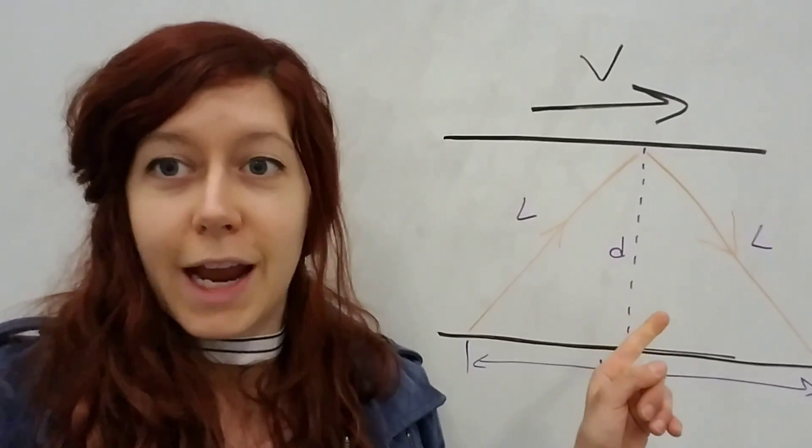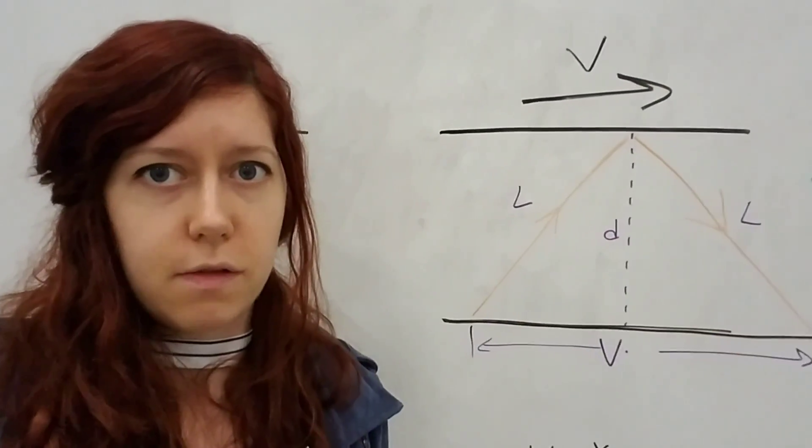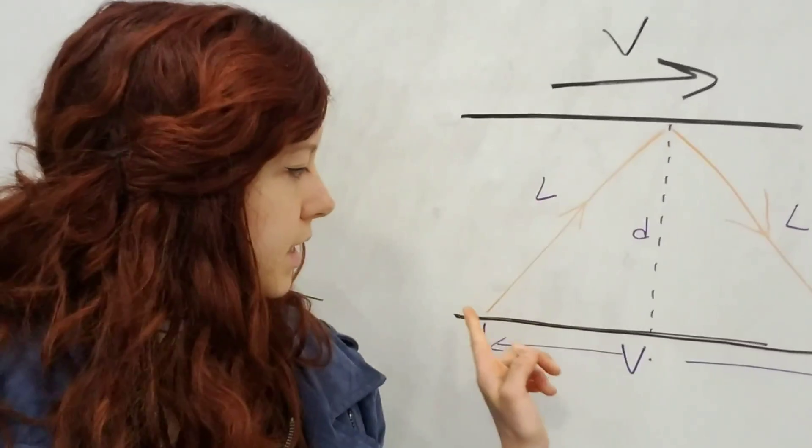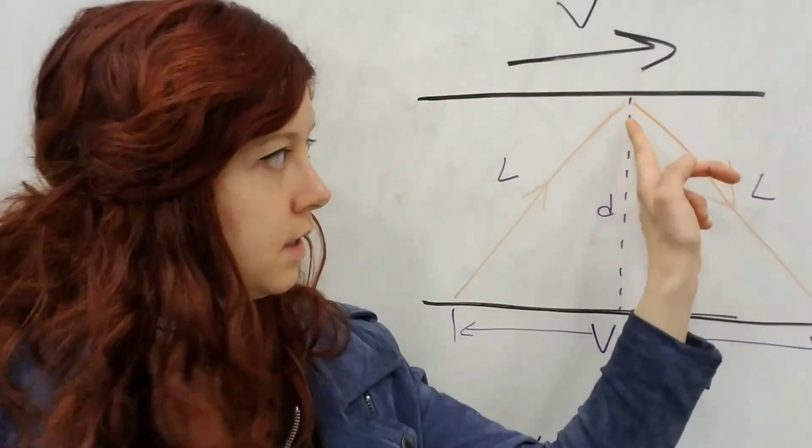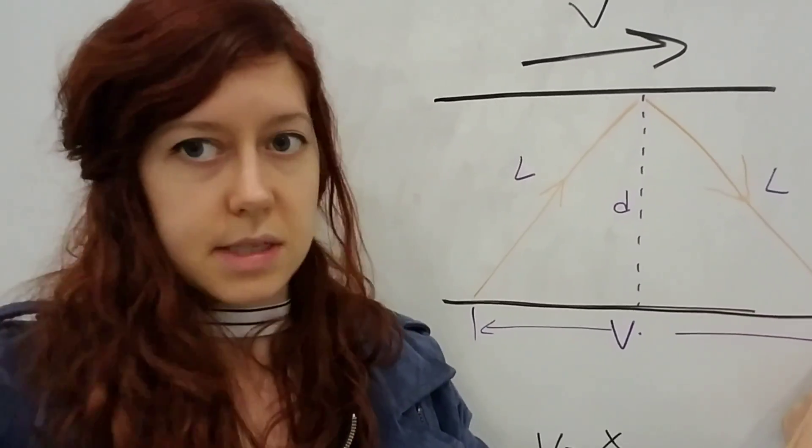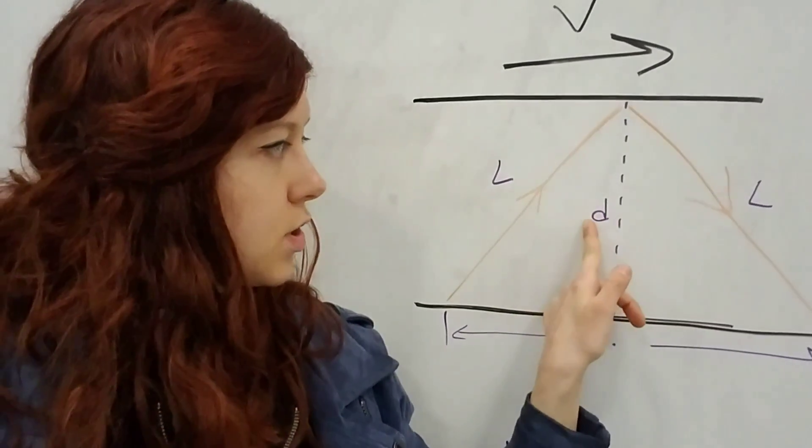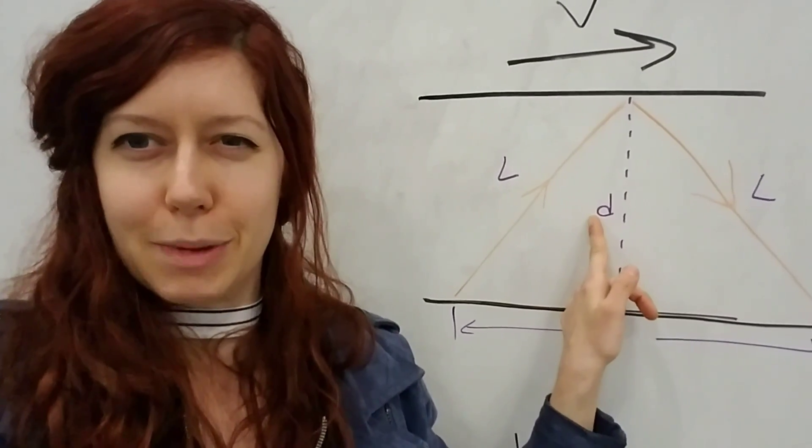If we're moving along at a speed v, the light leaves its point here, travels a distance l, and then comes back down a distance l. So this is our same distance d, even though it looks like b.